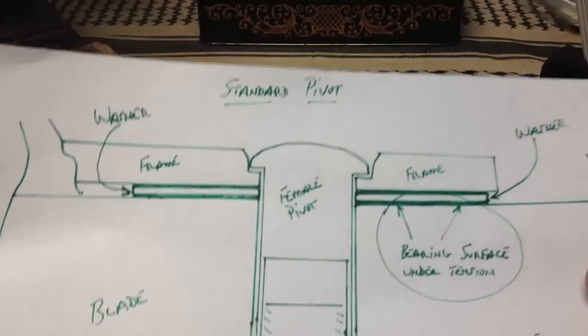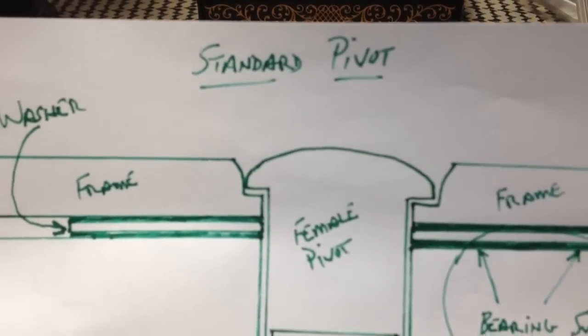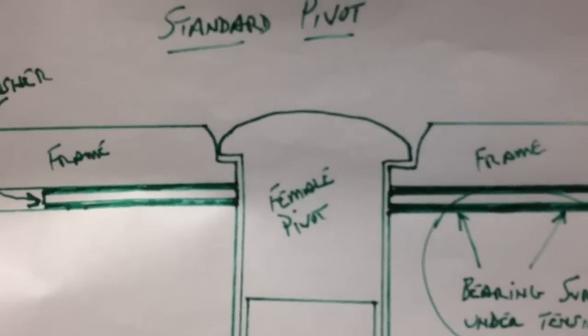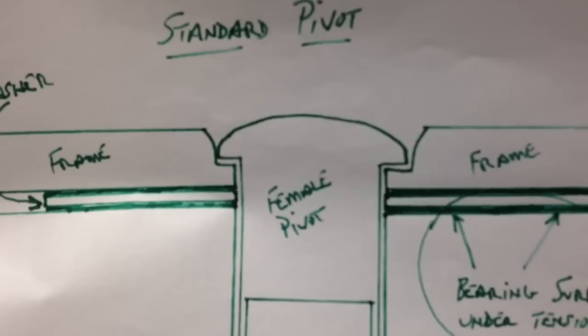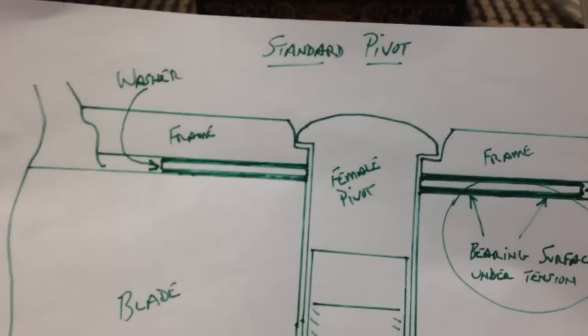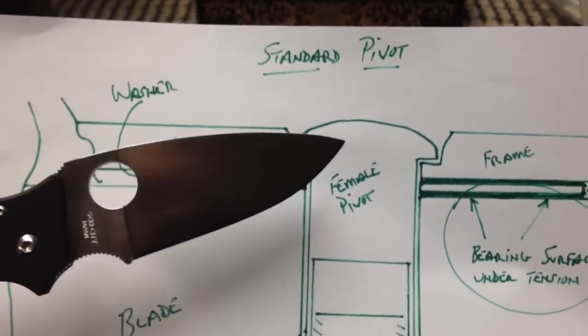The first one that I wanted to talk about tonight would be what I would call a standard pivot. And that is this rather questionable drawing that we have in front of us. We're going to use as a pointer tonight the Spyderco Superleaf.